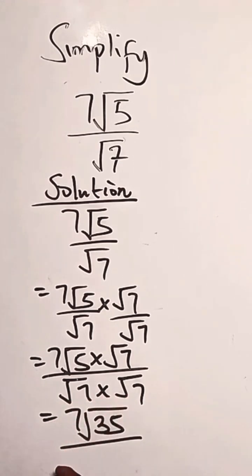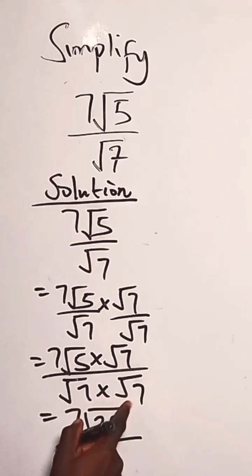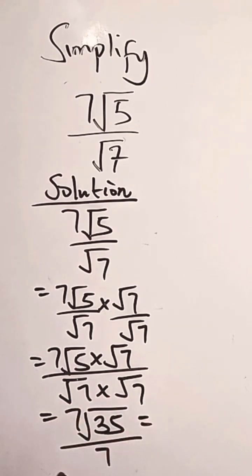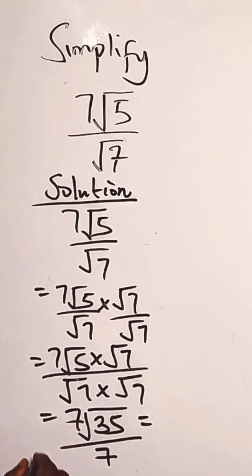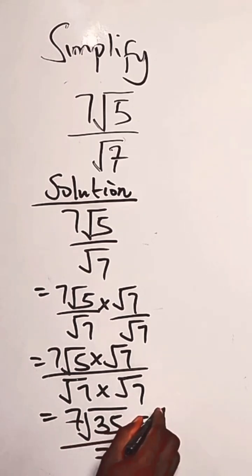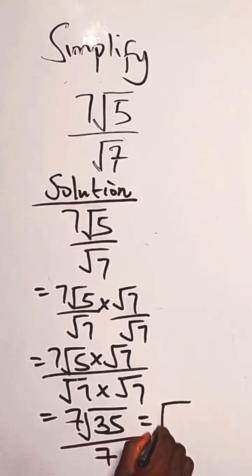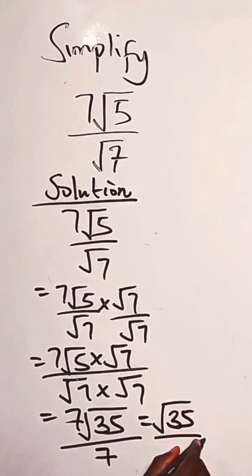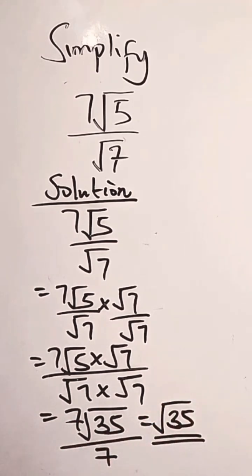We simplify from here. The 7s cancel, and we leave our answer in simplified form as √35.